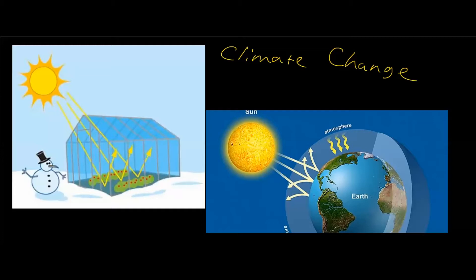If you start talking about climate change, a good model to use is what's called the greenhouse model. The greenhouse model simply states that our atmosphere is acting like a greenhouse. If you look at the model over here on the left-hand side, in science we always use models to explain things because it's easier to understand.